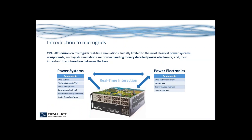At Opal RT, our vision on microgrid real-time simulation goes like this. Initially limited to classical power system components, microgrid simulations are now extending to very detailed power electronics and, most importantly, the interaction between the two. Classical power system components of microgrids typically include wind turbines, PVs, energy storage units, generators, transmission lines, loads, controls, and AC grids. Now we're coupling all this with power electronic components such as wind turbine converters, PV inverters, energy storage inverters, and grid tie inverters. One very important question is how we can have real-time interaction between those two groups of components.